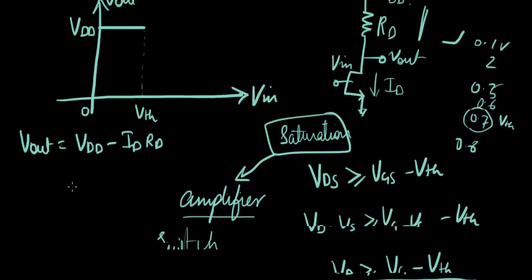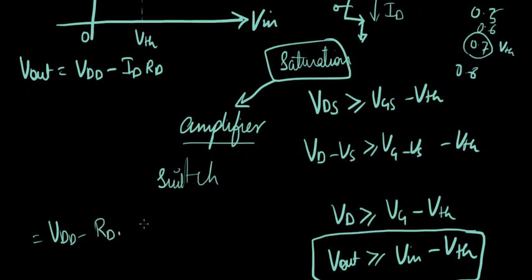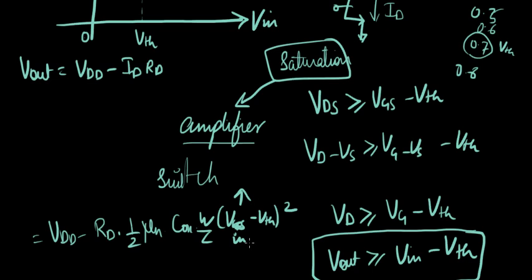Vout is VDD minus ID*RD. And we know the equation of ID in saturation. This equation becomes VDD minus RD times half of mu N times C_ox times W over L times VGS minus VTH, the whole square. Here, instead of VGS, it's VIN. So that's the equation for ID. Now, increasing VIN, what happens to Vout? Increasing VIN will increase this term.